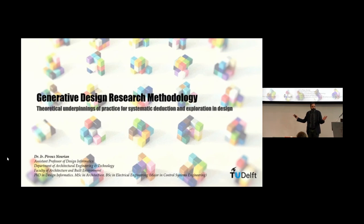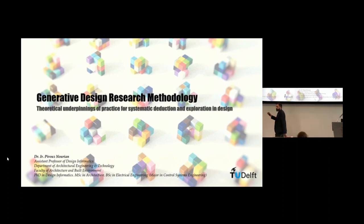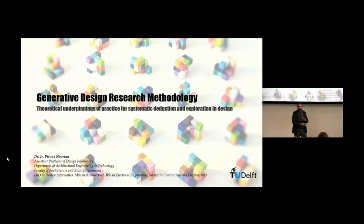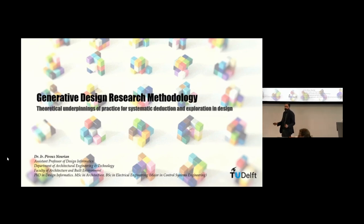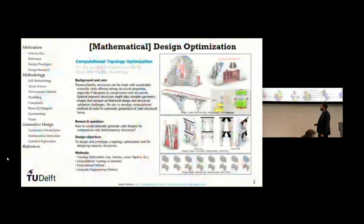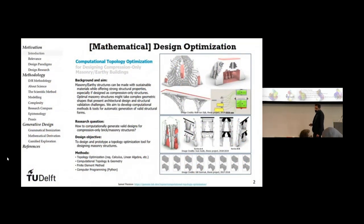Imagine these are buildings. Is there any difference? If you think there's no difference between this configuration and that configuration, then we can close the shop and all go home. But the question is: if there is a difference, what's the difference? How can we measure it? How can we do this right? This, in a nutshell, is what generative design is all about.